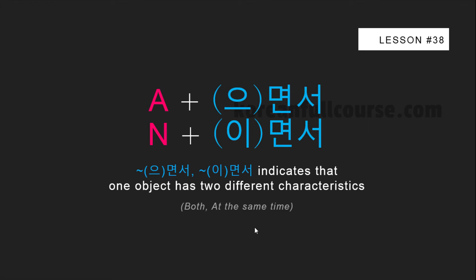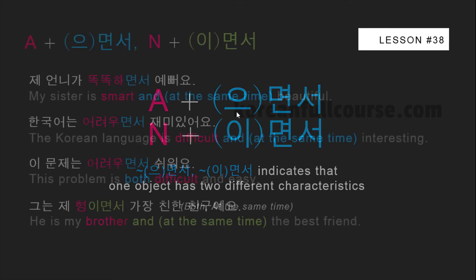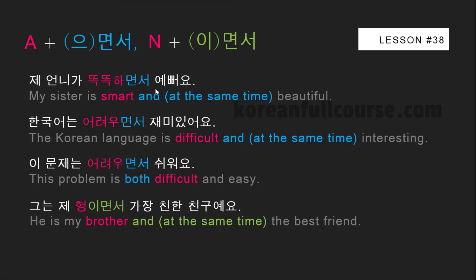Now let's look at examples of using 면서 with adjectives and nouns. Note that if a noun ends in a consonant, then you need to use 이면서. This construction is used to emphasize that the same object has two different characteristics at the same time. For example: 제 언니가 똑똑하면서 예뻐요 — my sister is both smart and beautiful. 한국어는 어려우면서 재미있어요 — Korean is both difficult and interesting. 그는 제 형이면서 가장 친한 친구예요 — he's my brother and at the same time my best friend.